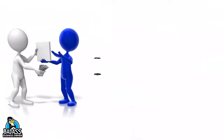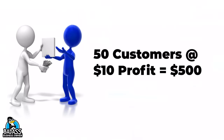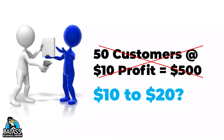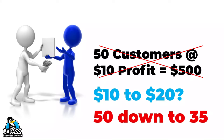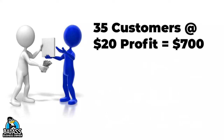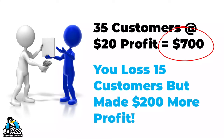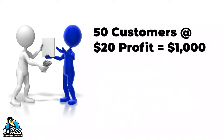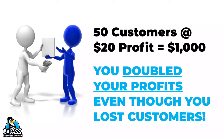Let's look at a quick example. Say you have 50 monthly customers and you make $10 of profit on each — that's $500 in monthly profit. You raise your price by $10, so your profit per customer is now $20, but you lose 15 customers, leaving you with 35. That gives you 35 times $20, which equals $700 in profit. Yes, you lost 15 customers but gained $200 more in profit. And once you replace those 15 customers, you have 50 customers times $20, which equals $1,000 in profit — you've doubled your profits without working any more hours. That's what I call the win.